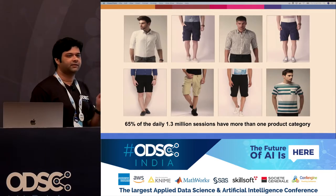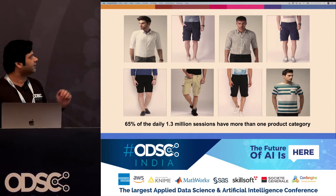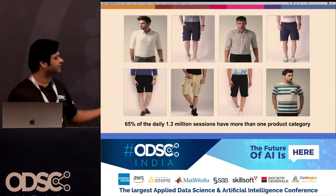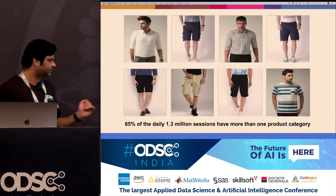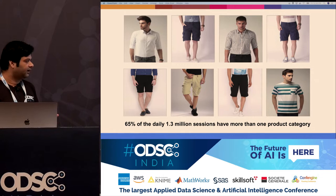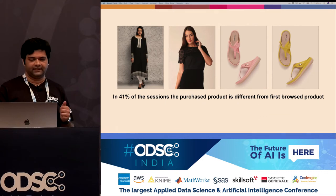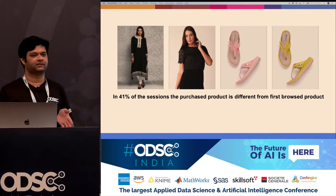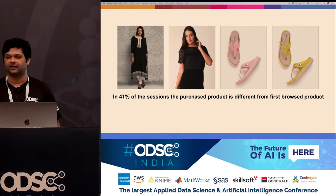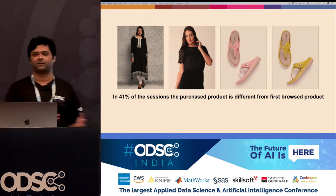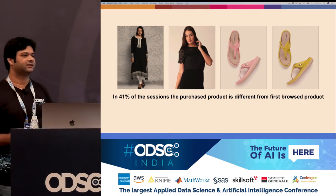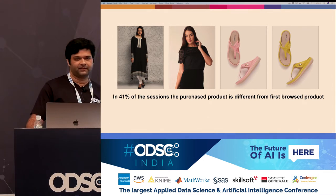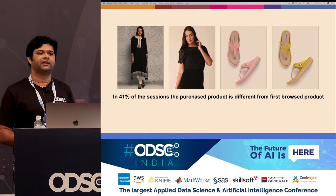To emphasize what I'll call the context switch: another session starts with a shirt, has shorts, a casual shirt, and then shorts again — a lot of switching happening. We see that 65% of millions of daily sessions have more than one product category. In terms of purchase data, in 41% of sessions the actual purchase product is quite different from the first product the person started with — people start with something and buy something else. This is like window shopping in a mall, where you might start with one product and not necessarily buy the first item you looked at.